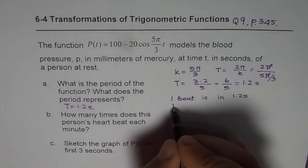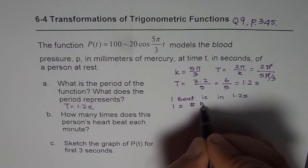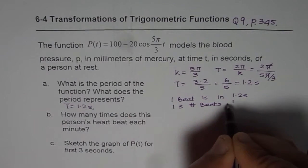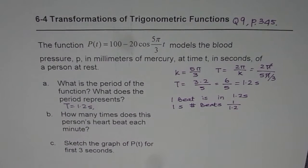So in one second, number of heartbeats will be how many? Number of beats will be 1 divided by 1.2.